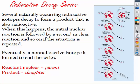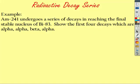So the reacting nucleus is the parent, and the product is its daughter. This is a type of problem you could see. Americium-241 undergoes a series of decays in reaching the final stable nucleus of bismuth-83. Show the first four decays, which are alpha-alpha, beta-alpha.